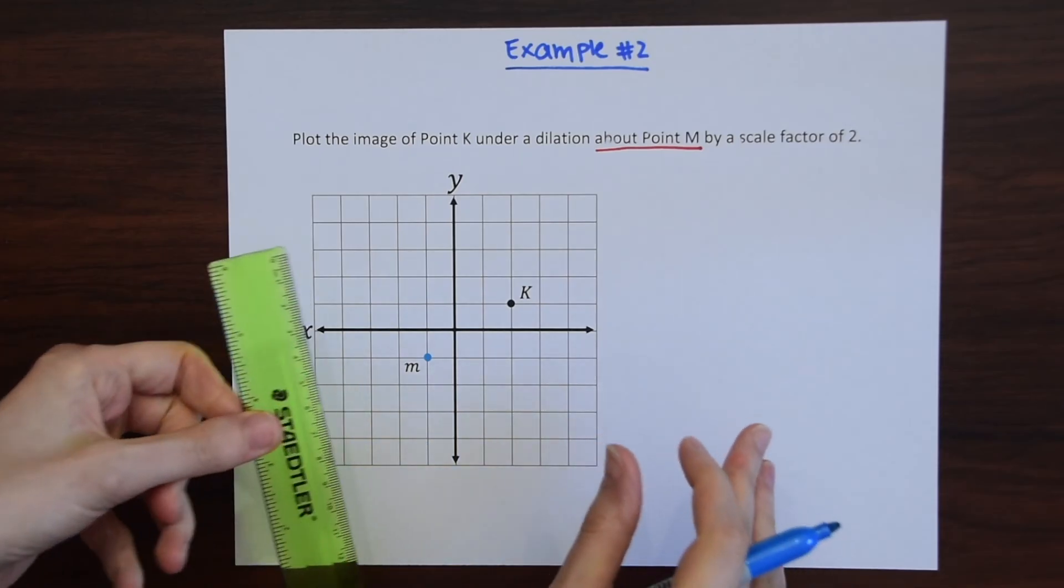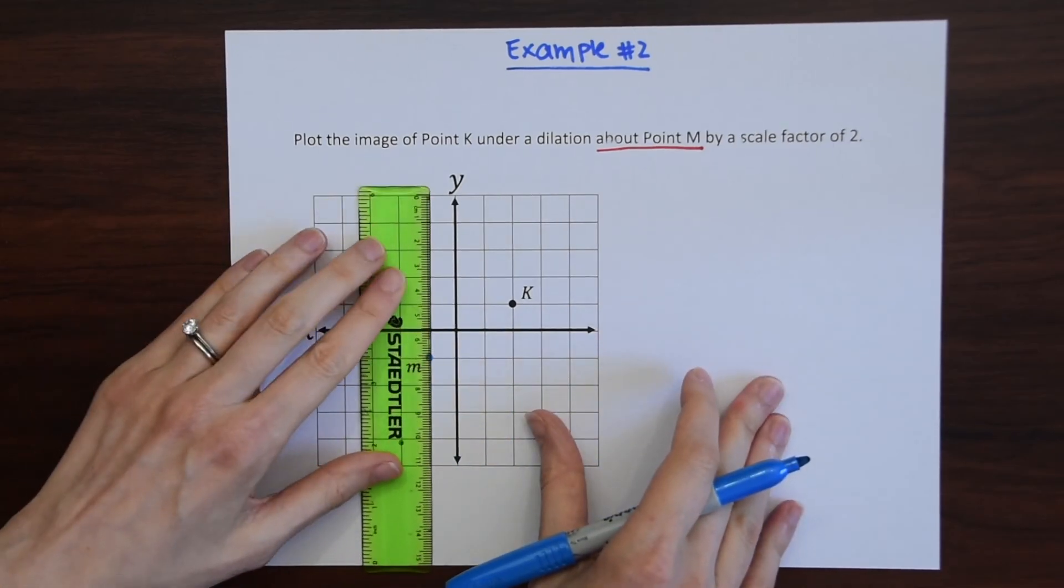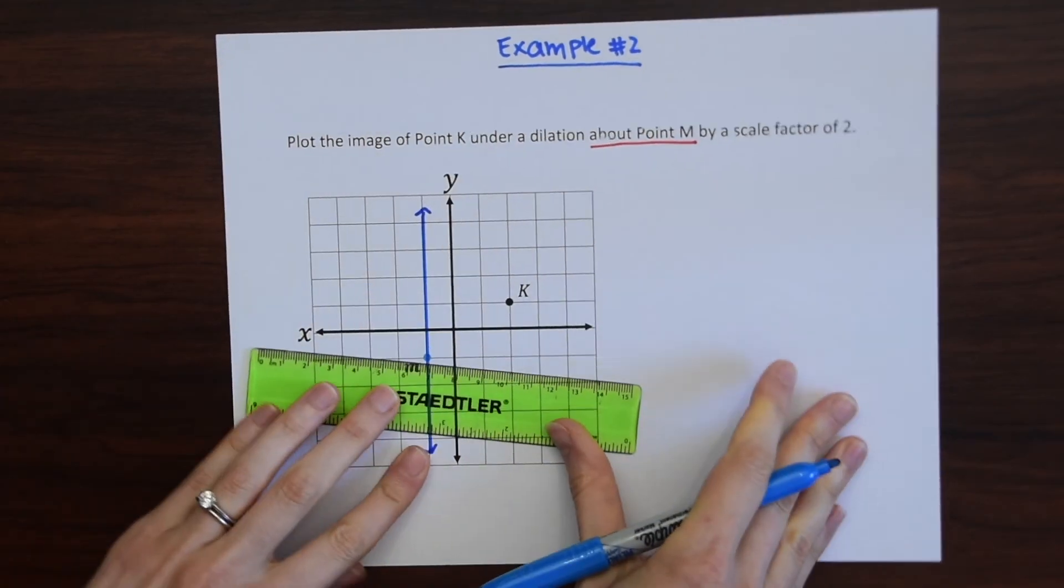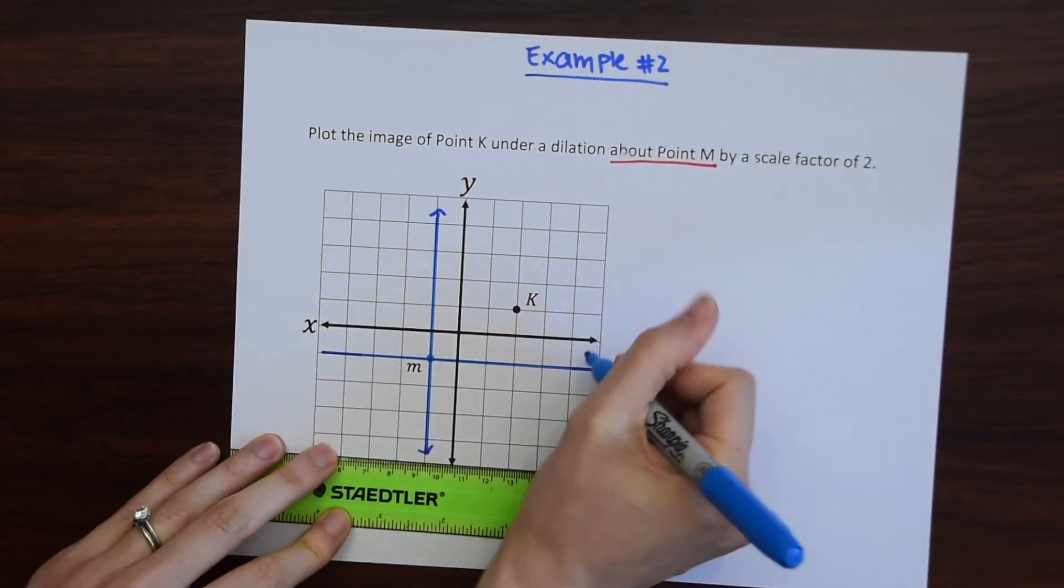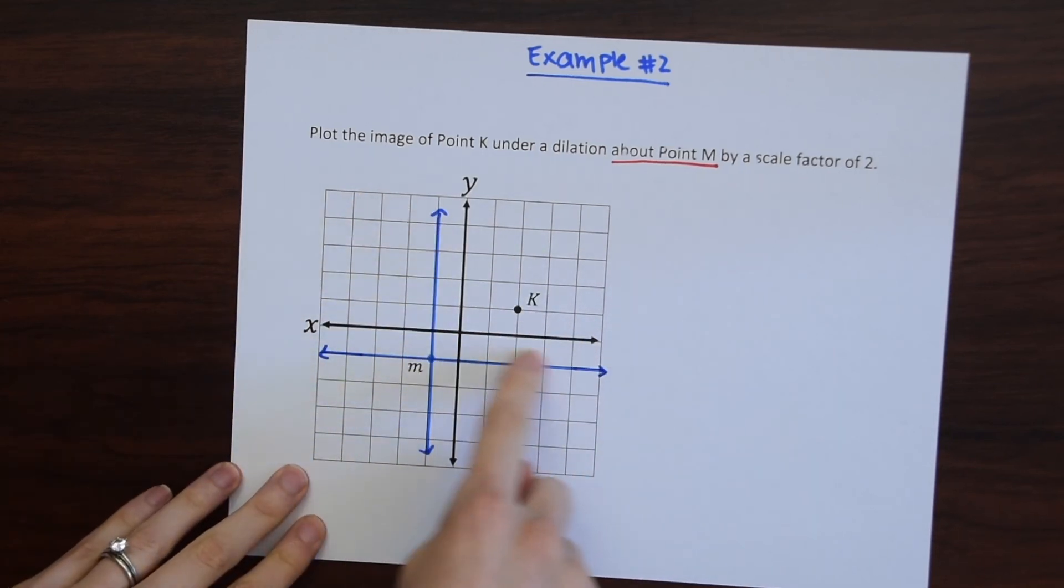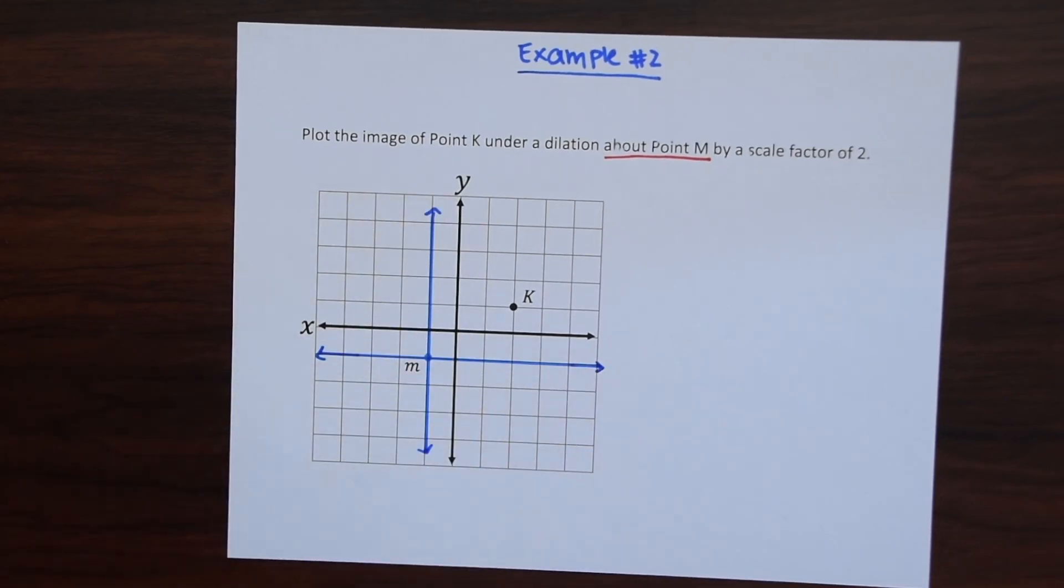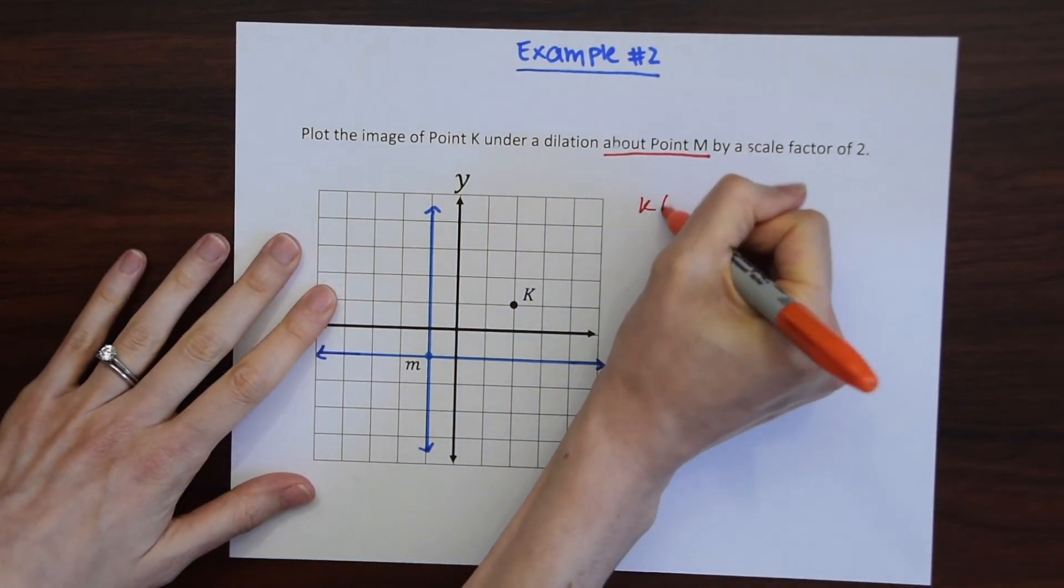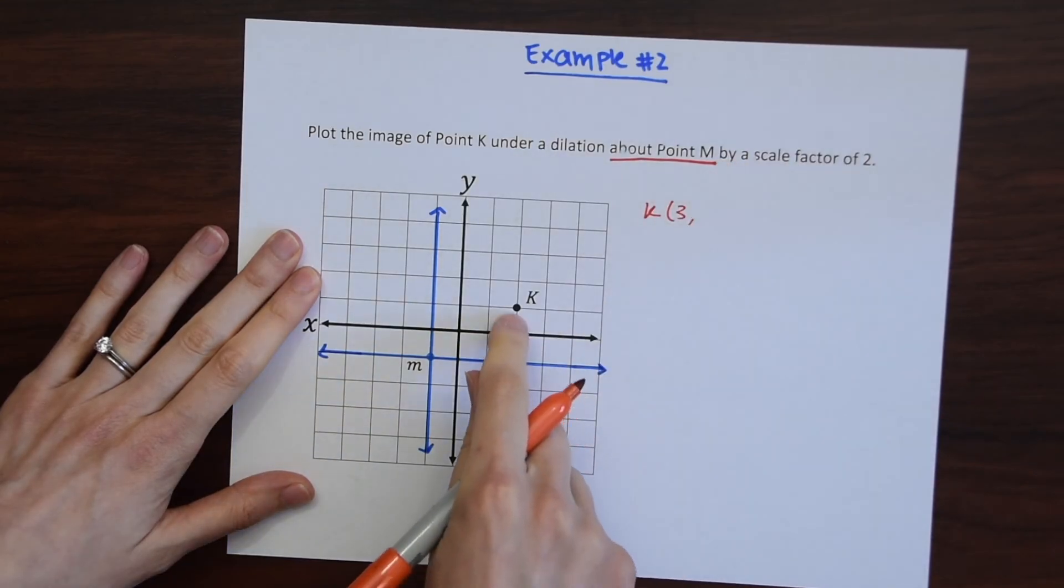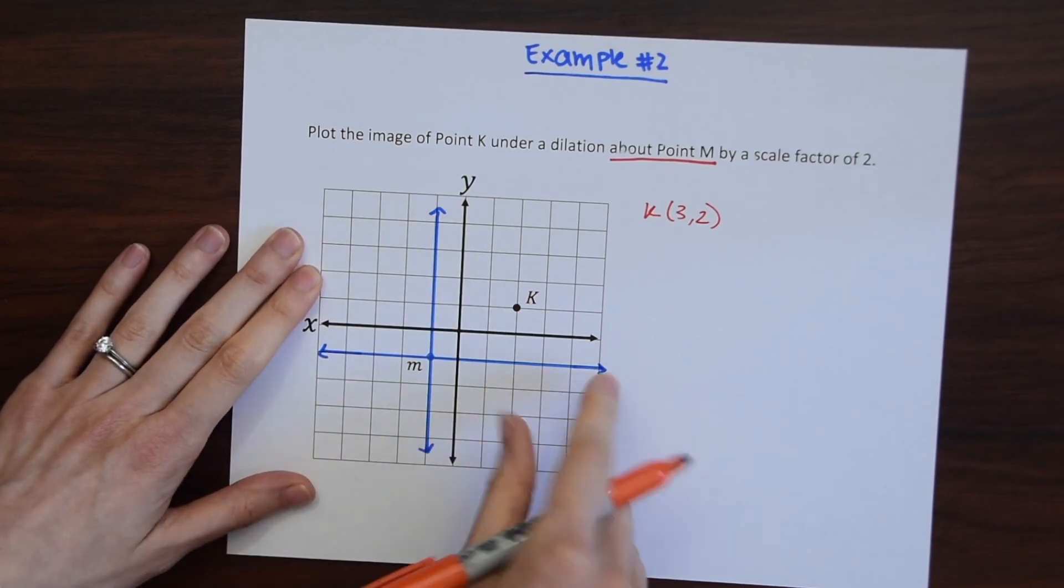So to do that I'm just going to draw an XY axis stemming from point M. So M is going to be like our new origin. So now we can find the value of point K in relation to this new coordinate point here, in relation to this new coordinate plane here that we just drew. So you can see that the new K has this value of one, two, three, one, two. So K is equal to (3, 2) when it's in relation to this blue line.